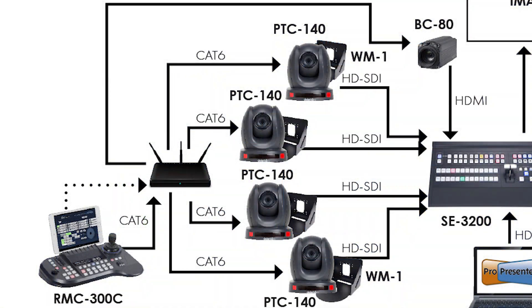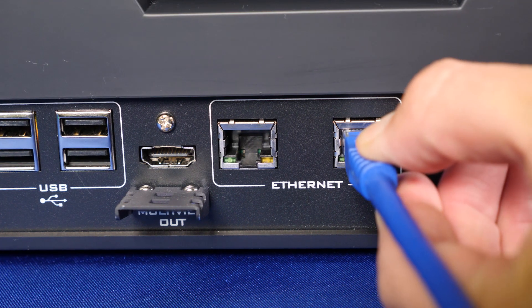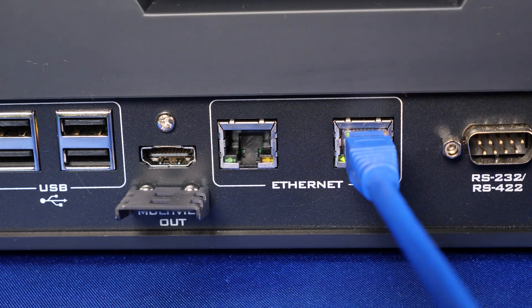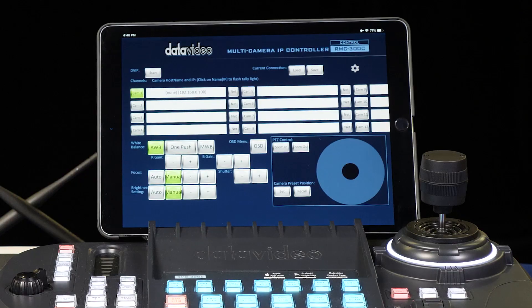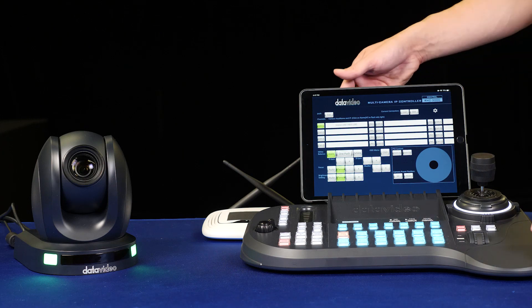You'll need a router or LAN network at your business or venue with enough Ethernet ports for the amount of cameras you want to control and connect to the RMC 300. You can then have your tablet or smartphone connect via Wi-Fi to the same network.